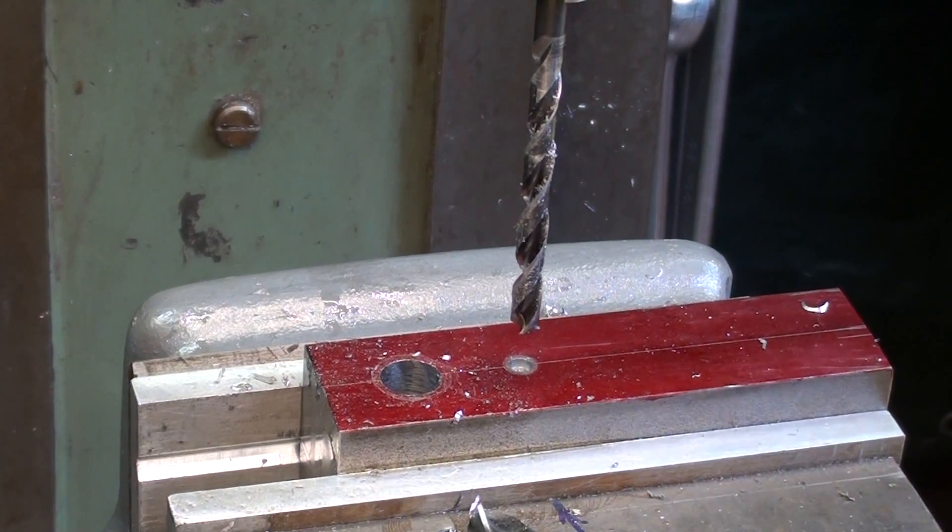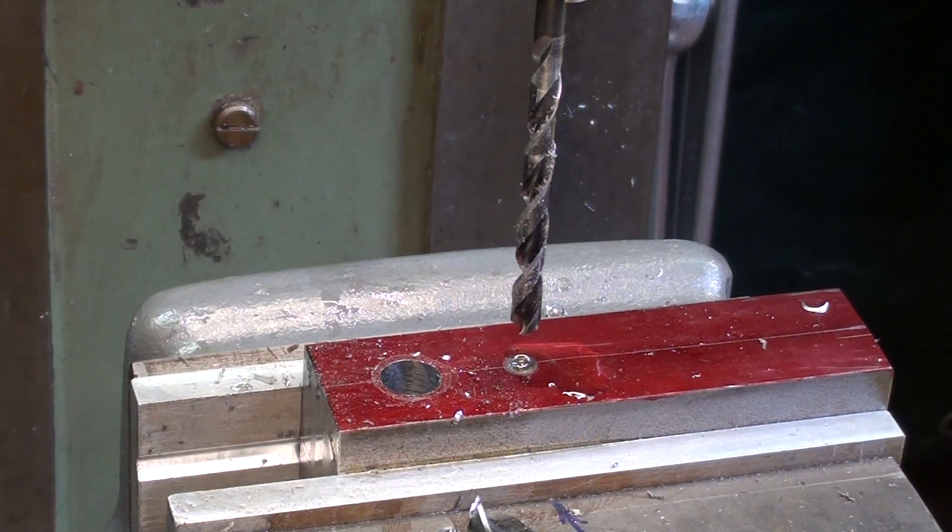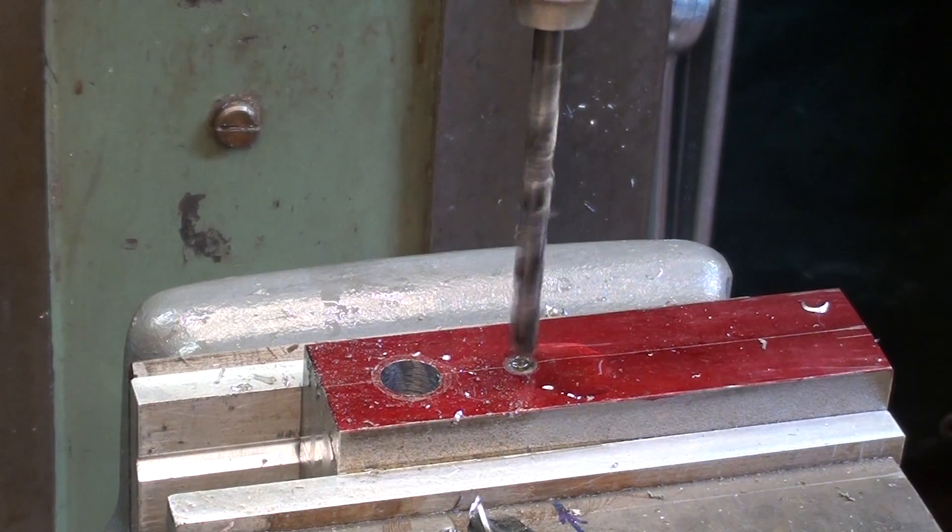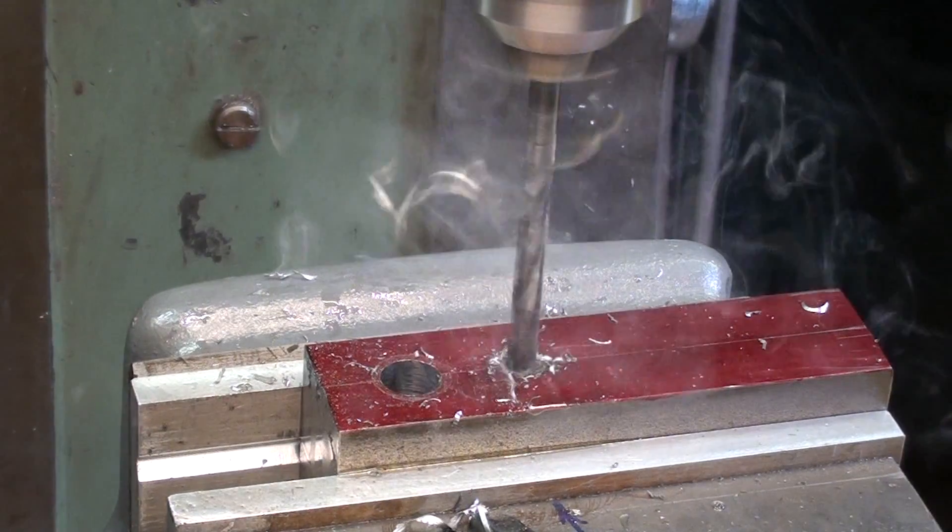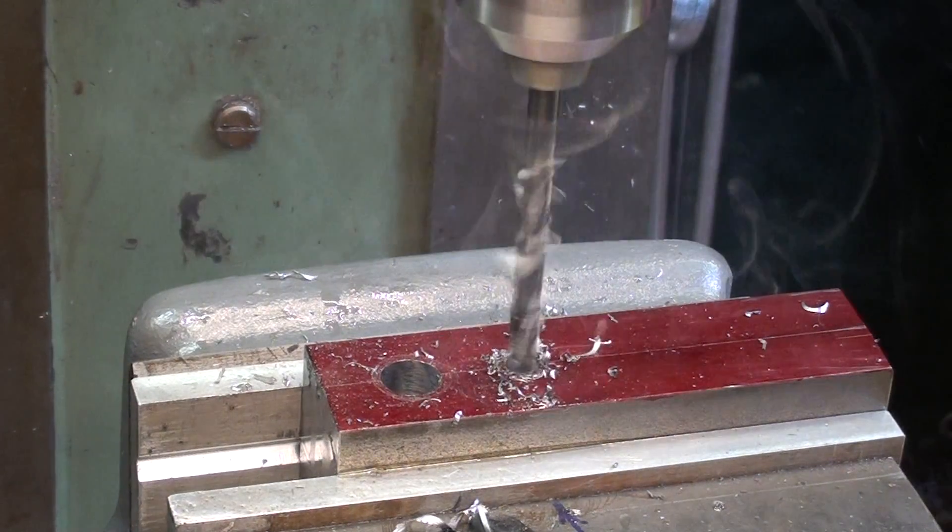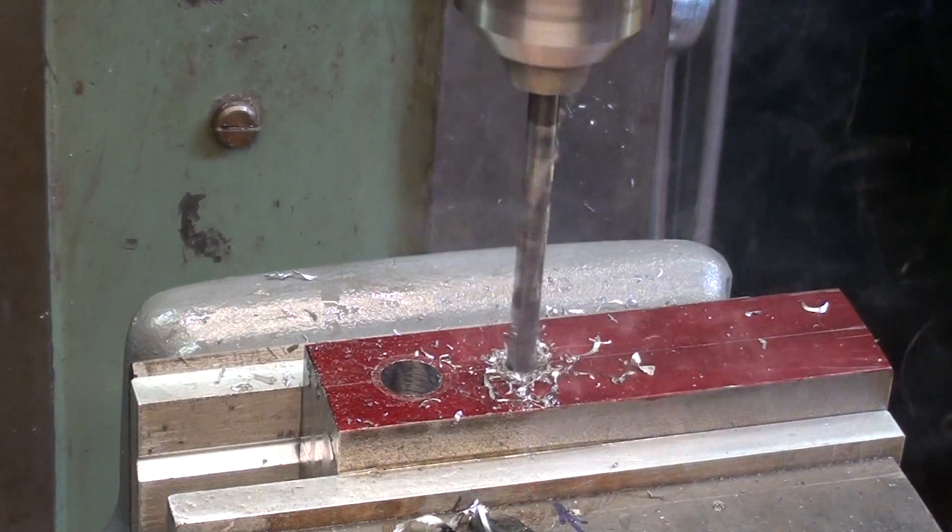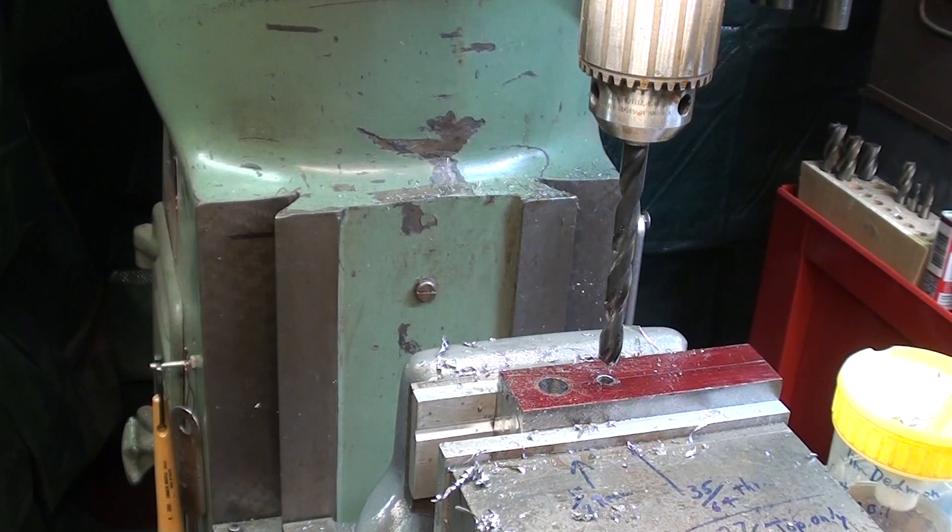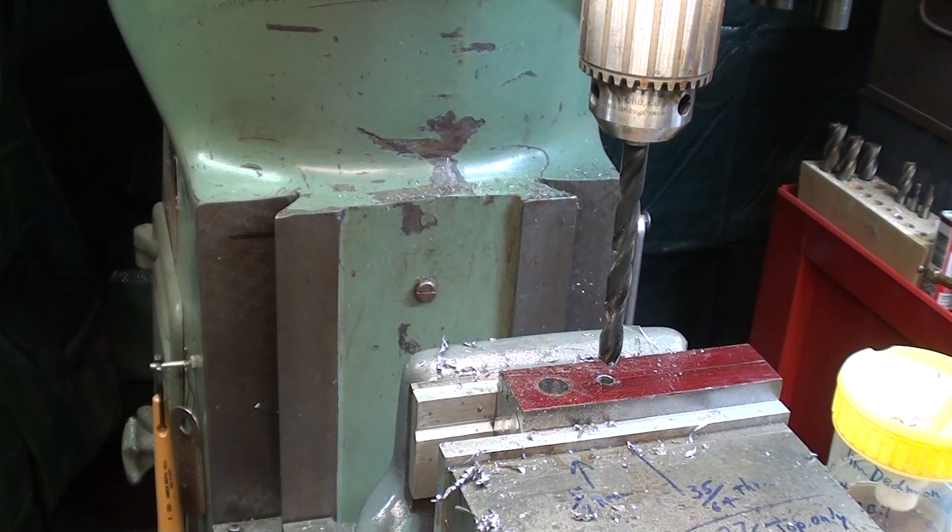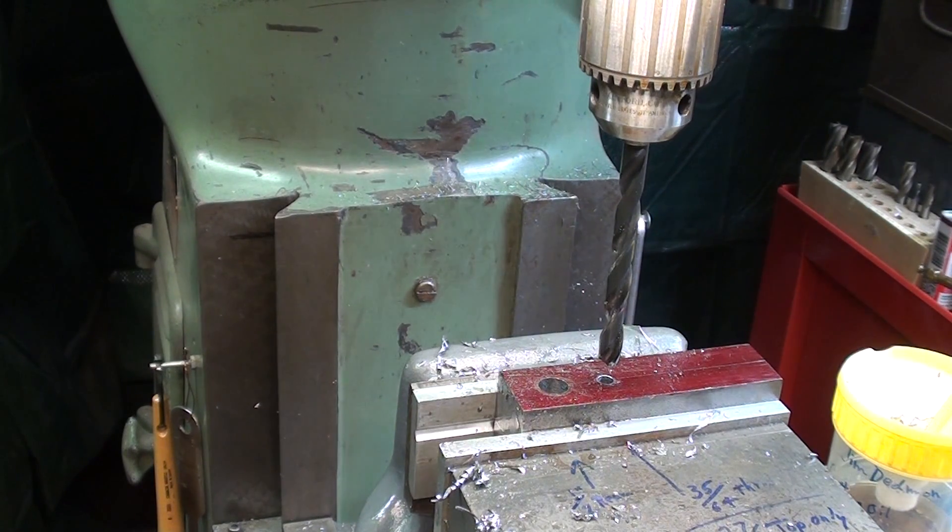Next, I will drill a quarter-inch all the way through both pieces. Now, I'm drilling 35/64 all the way through both pieces, and that's one size larger than 3/8.